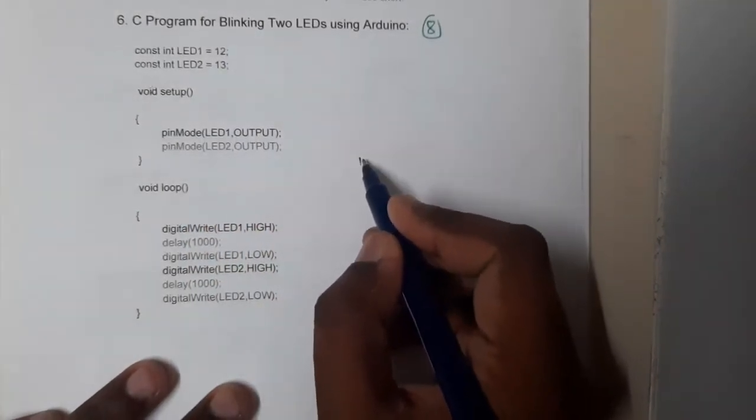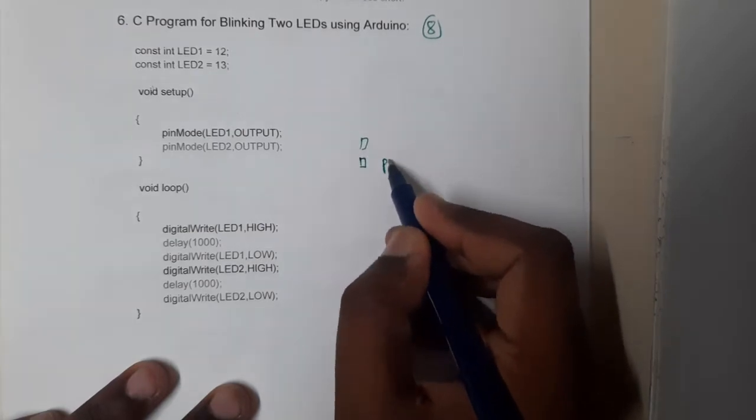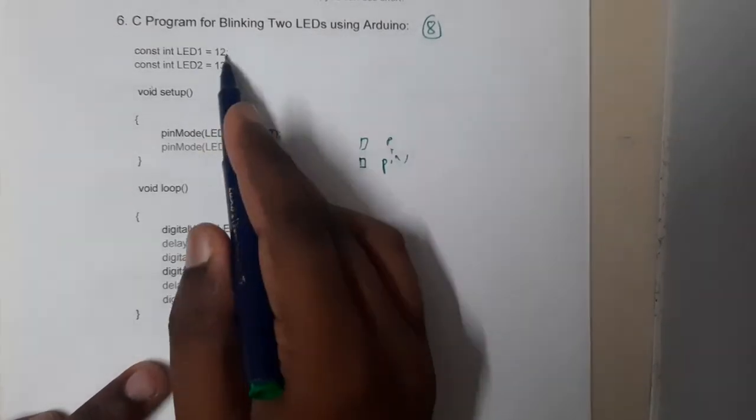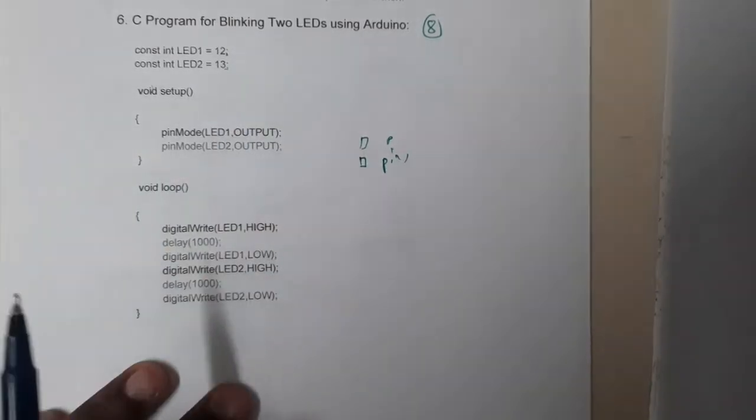To the pins—they will be calling them pins—to pin 12 and pin 13. So now initially, remember one thing: whenever you are coding on Arduino, the setup and loop are really mandatory.